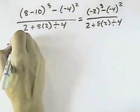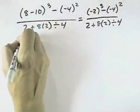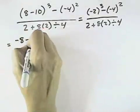Then we'll move on to exponents. Negative 2 to the third power is negative 8, minus negative 4 to the second power is 16.